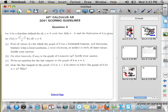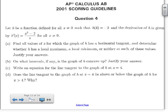I'm going to do the 2001 AP Calculus AB question 4. Let h be a function defined for all x not equal to 0 such that h of 4 is equal to negative 3 and the derivative of h is given by h prime of x equals x squared minus 2 all over x for all x not equal to 0.